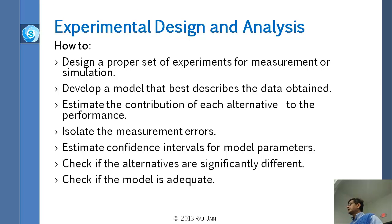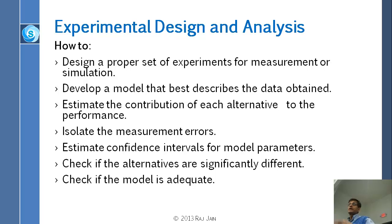Check if the alternatives are significantly different. Basically we will find out whether they are 90 percent confident, 95 percent — whatever confidence level — that they are different, and check if the model is adequate, so we will have the visual test.